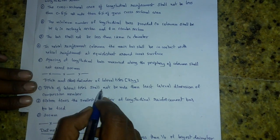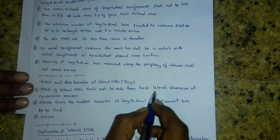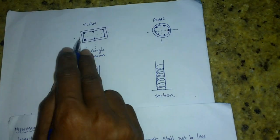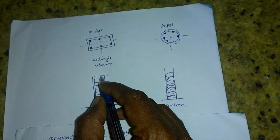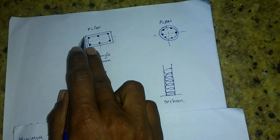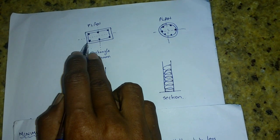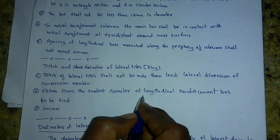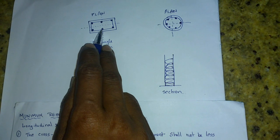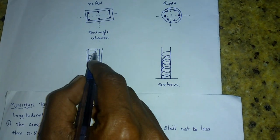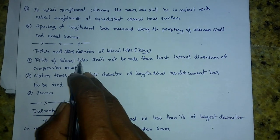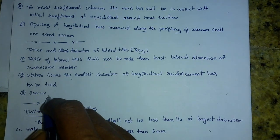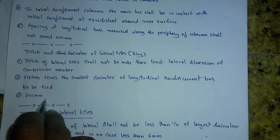The pitch of the lateral ties, meaning the distance between the rings, shall not be more than: the least lateral dimension of the compression member, or 16 times the smaller diameter of the longitudinal reinforcement to be tied — for example, if bars are 16mm and 12mm, we take 12mm multiplied by 16. If either of those values exceeds 300mm, we consider 300mm as the pitch.